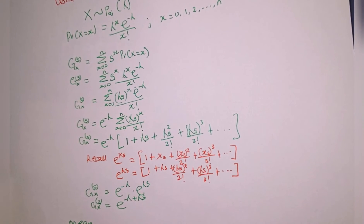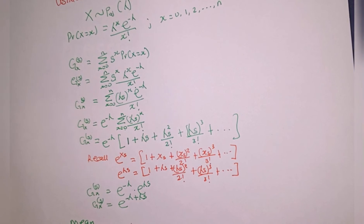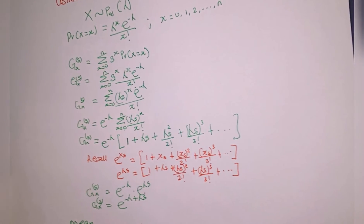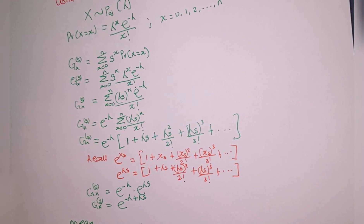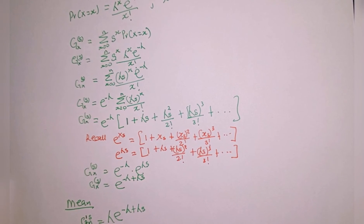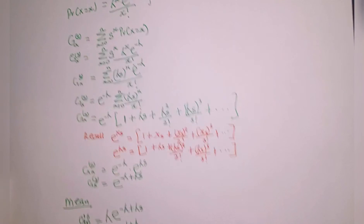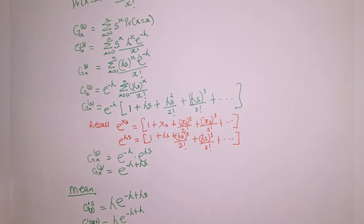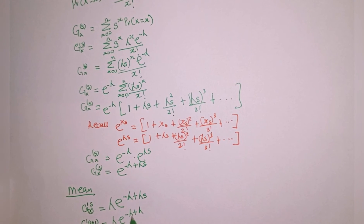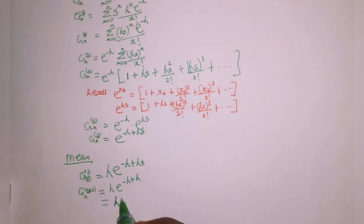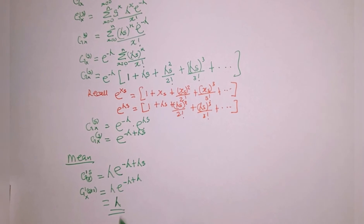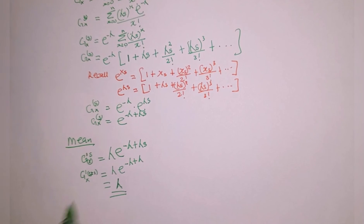Differentiating with respect to s, we get lambda times e raised to the power of minus lambda plus lambda s. At the first derivative evaluated at s equal to 1, we substitute s equal to 1: this gives lambda times e raised to the power of minus lambda plus lambda. Since minus lambda plus lambda equals zero, e to the power of zero equals 1. Therefore the first derivative at s equal to 1 is lambda times 1, which equals lambda. So the mean equals lambda.